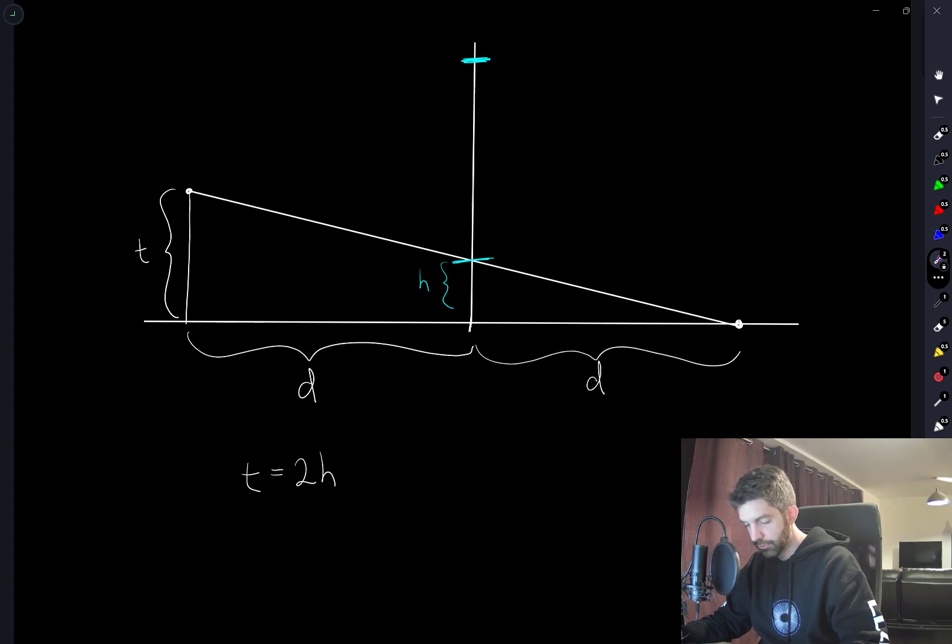But, in this idealized version of the problem, you should always theoretically be able to see your feet, for some position of the mirror, you'll always be able to see your feet.